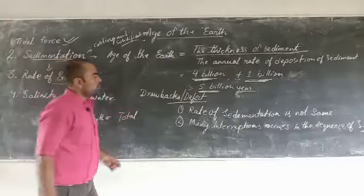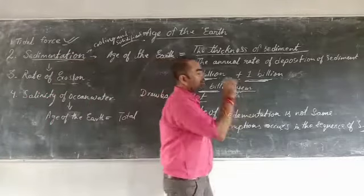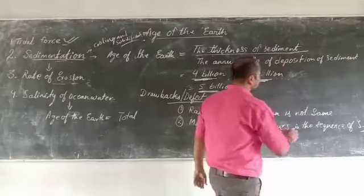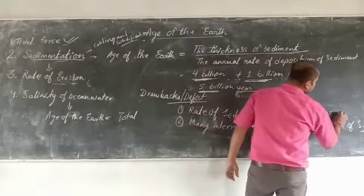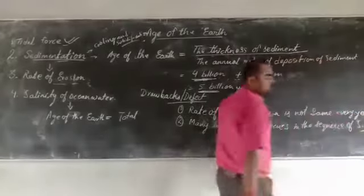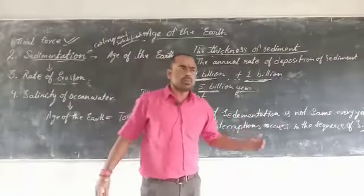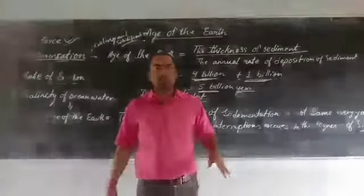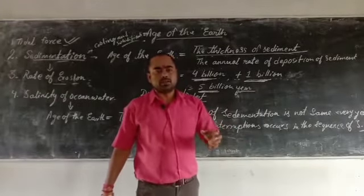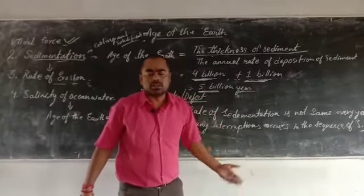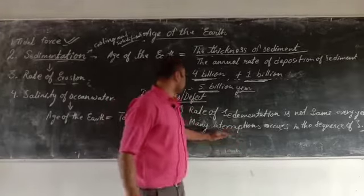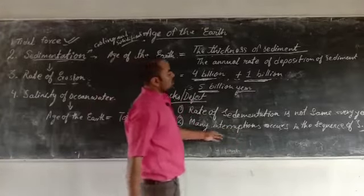There are certain drawbacks of this method. First, the rate of sedimentation is not the same every year. For example, suppose sedimentation was 2 or 3 centimeters one year; next year it could be more — 5 or 6 centimeters. So this variability gives us false information, making this method unreliable.